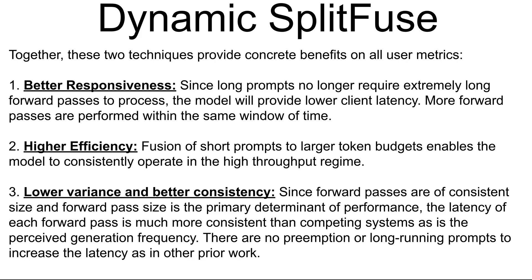There are three major benefits. First, better responsiveness: by splitting long text into smaller chunks, the model handles them faster so you get answers more quickly. Second, higher efficiency: when dealing with short pieces of text, the system combines them to reach an ideal token count, keeping the model in its most efficient state — like keeping a factory worker fully occupied for their entire shift rather than leaving them idle. Third, lower variance and better consistency: since processing chunks are more uniform in size, the time to process each chunk is more predictable, so you won't experience random delays.